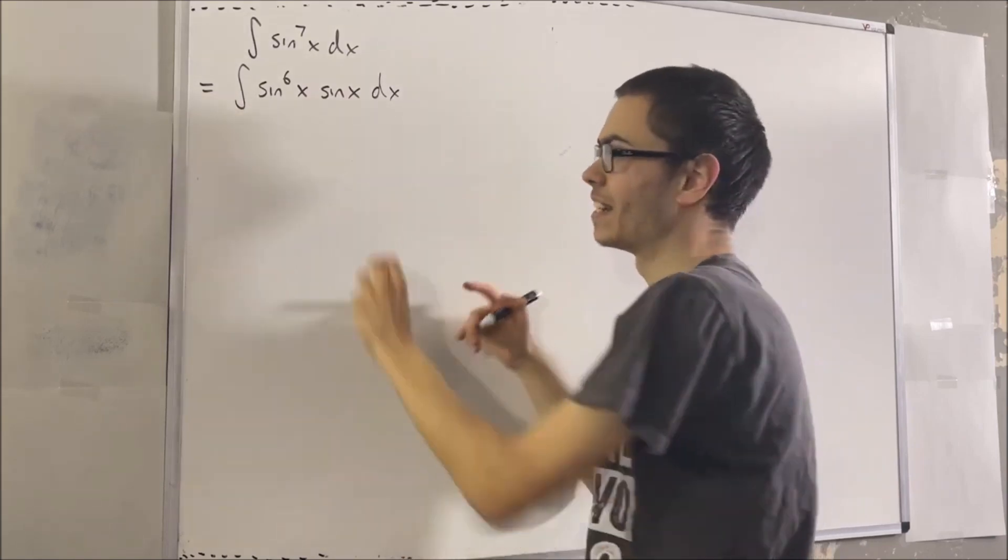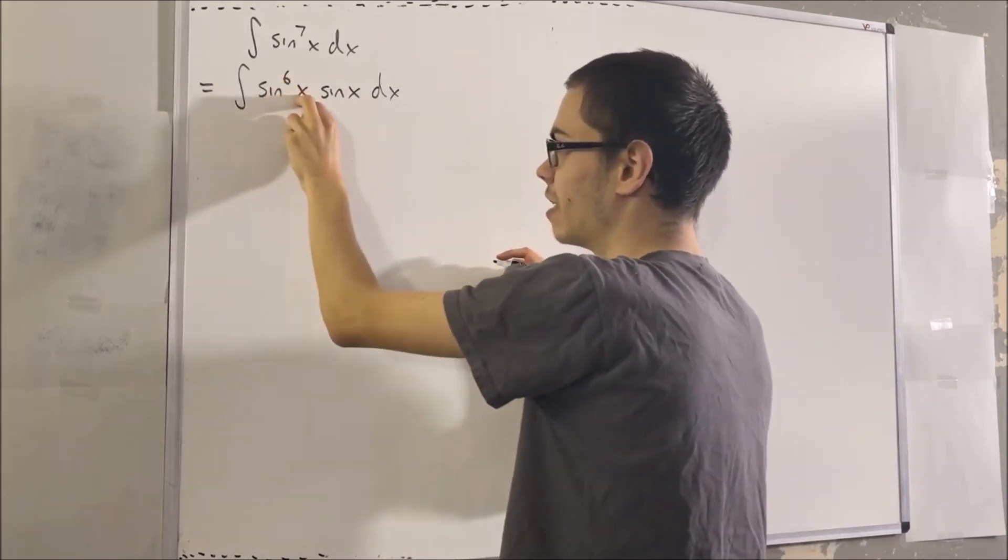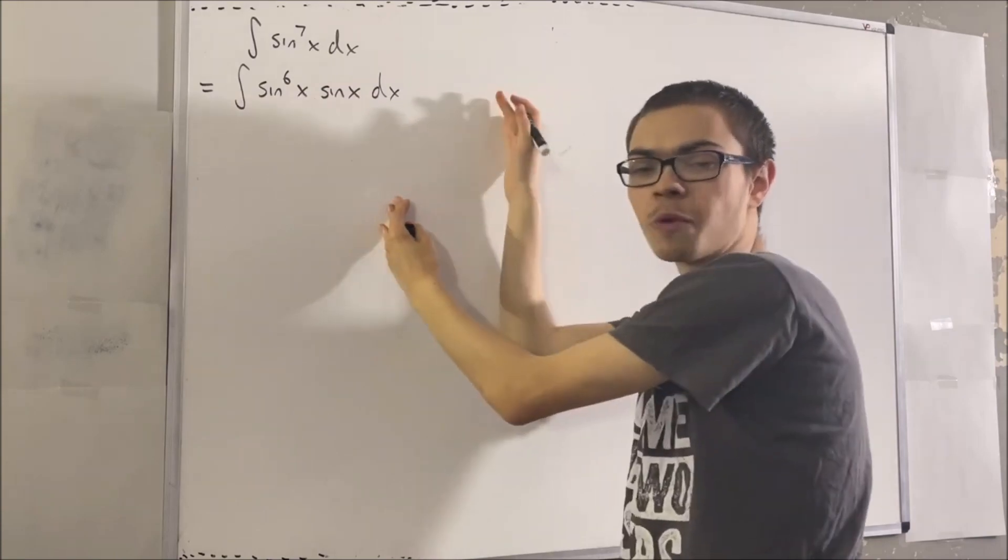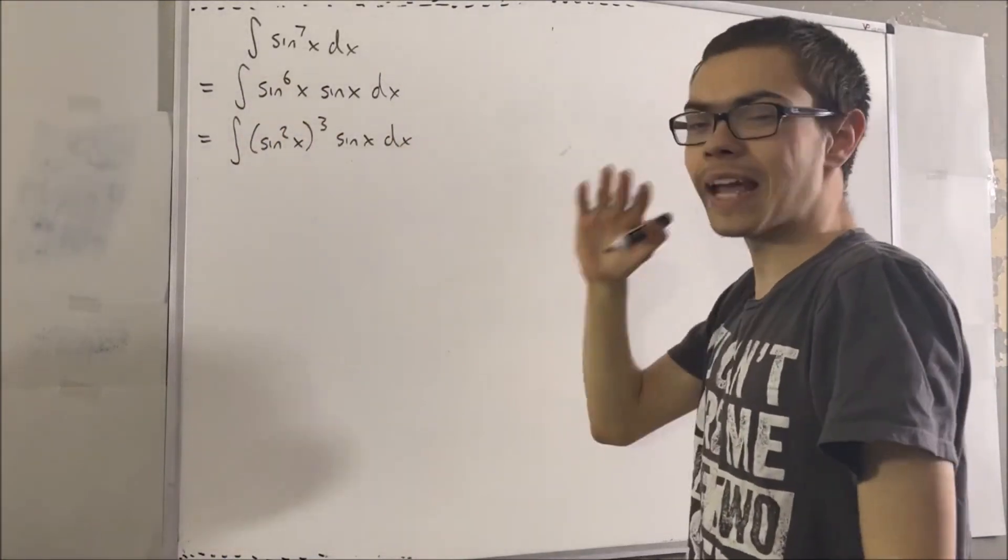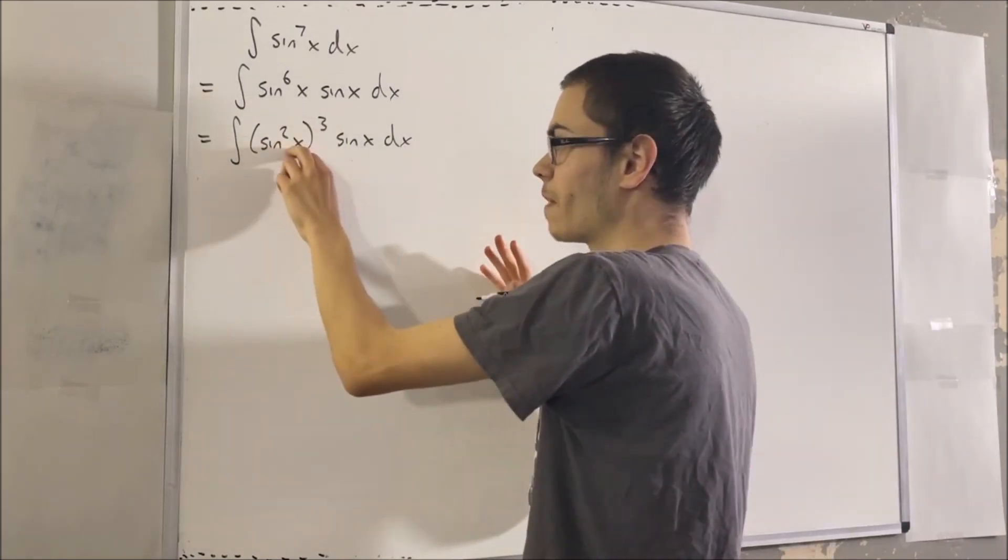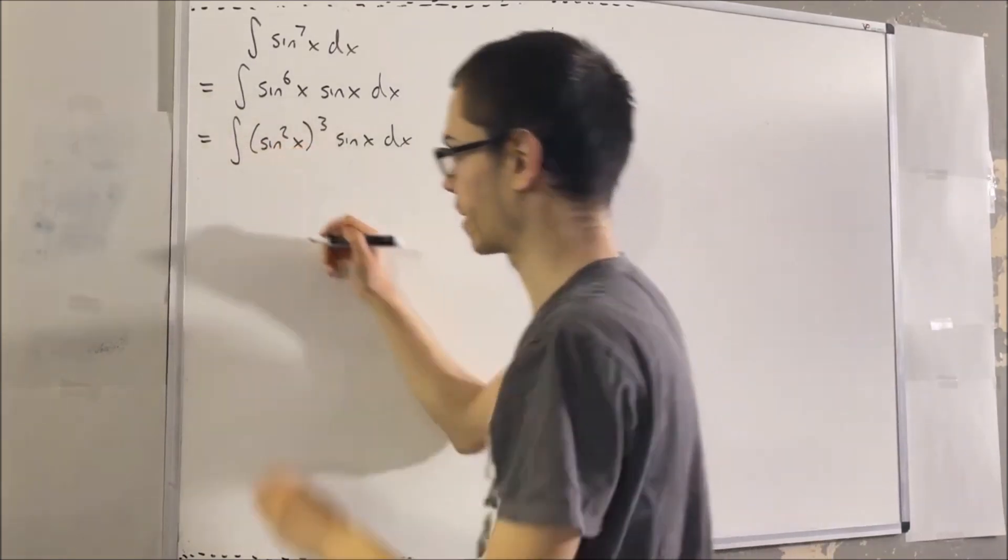Well, realize that sine to the 6th of x is really just sine squared of x to the power of 3. And we also know that sine squared of x is equal to 1 minus cosine squared of x.